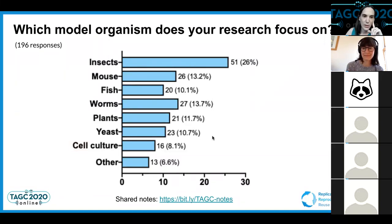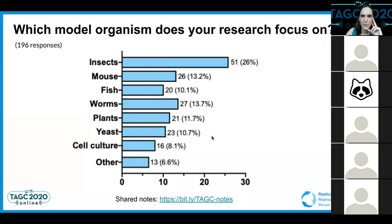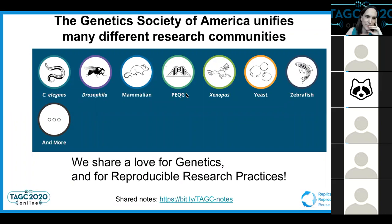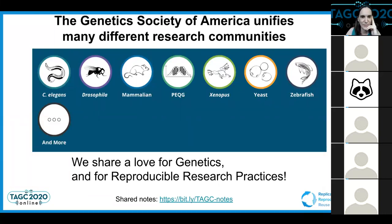We sent you all a survey a couple of days ago, and many of you answered quite quickly — we got almost 200 responses. One of the questions we asked was what your favorite model organism is, and as you can see from your responses, we really have scientists from all of GSA's research communities joining us today. GSA really unifies many different research communities that each study their own favorite model organism, but we all share a passion for genetics — and apparently a passion for reproducibility in science as well. We are very grateful to the GSA for giving us this opportunity, and I'll pass it on to Lenny.